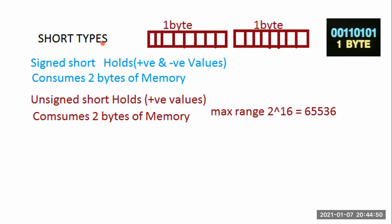The short data type provides two bytes for its values. One byte is equal to eight bits, so eight bits plus eight bits equals 16 bits — totally two bytes of memory. Each digit in a byte represents one bit, so one byte contains eight bits total.